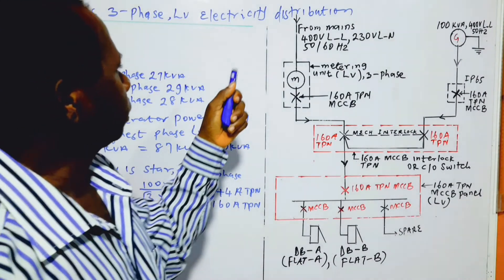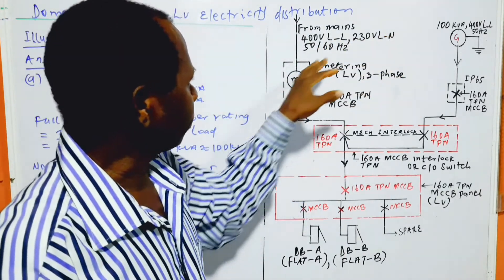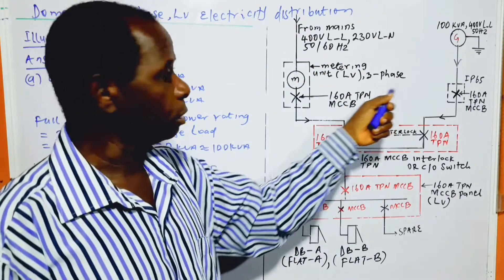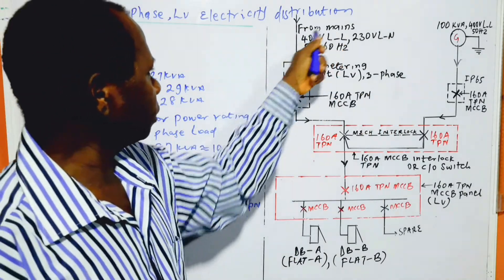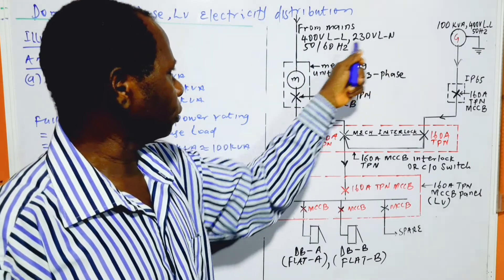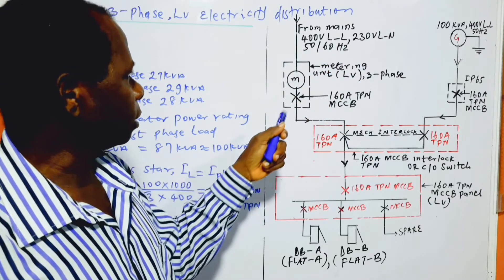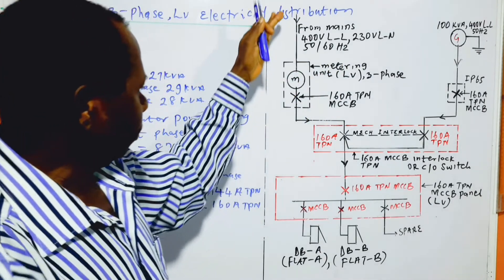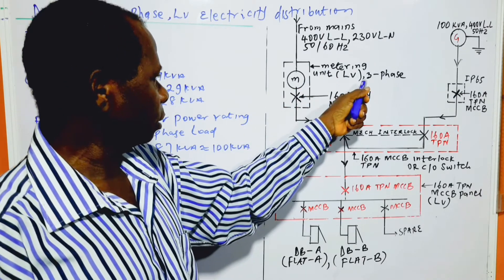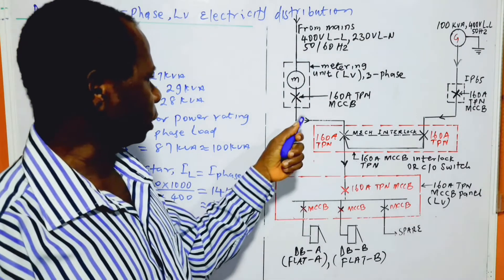Moving on, the power supply schematic diagram for the building is this. We have from the mains 400 volts line to line, 230 volts line to neutral, at 50 or 60 Hz frequency. This is the mains side. Then we have the metering unit, three-phase metering unit at low voltage, 400 volts line to line, 230 volts line to neutral.